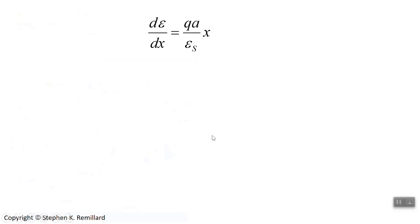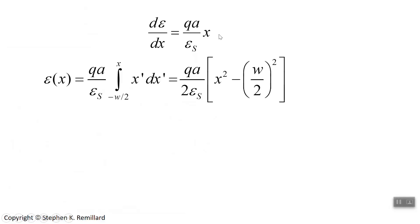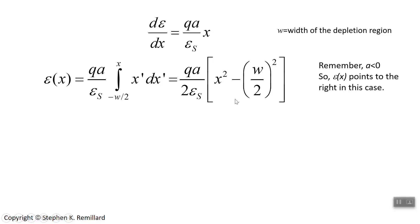To solve, move dx to the other side and integrate. Integrating from the left edge of the junction (-W/2) to a point of interest x gives the electric field: E = (QA/ε_s) · (x²/2 - (W/2)²/2). At x = -W/2, the electric field is zero, which you can verify from the result. The electric field profile is dome-shaped — a parabola — with its maximum right at the metallurgical junction (x = 0).